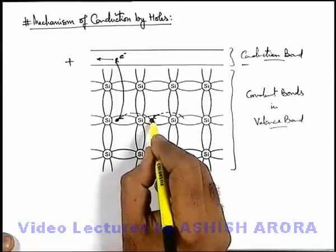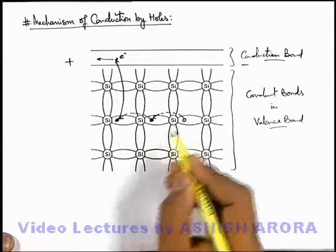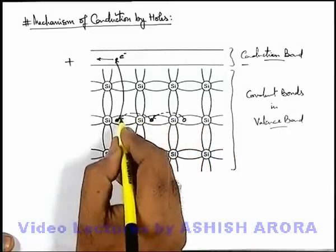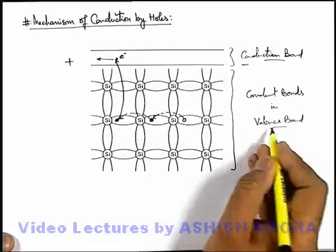And this bond will be formed again, and the hole is shifted to this zone. So here we can say actually an electron bond is transferring inside the valence band.